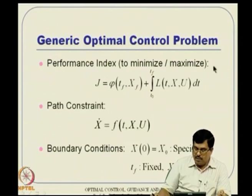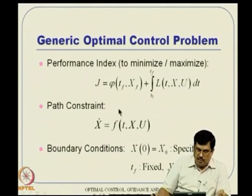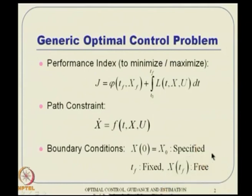The generic optimal control problem, as discussed many times before, takes the form J = φ (terminal penalty) plus some path penalty, along with a path constraint which is the system dynamic equation and boundary conditions. We will consider X(t_f) as free. This particular LQR problem does not talk about a generic formulation anymore — it talks about a specific form of cost function and a specific form of system dynamics.